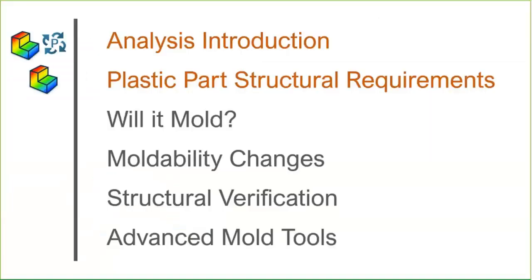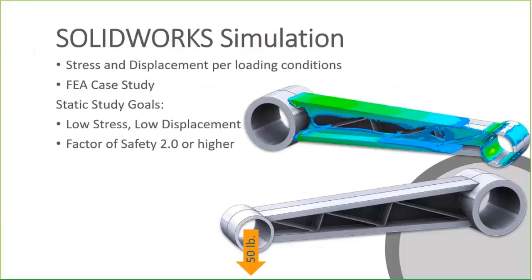Let's look at the structural requirements of our plastic part — essentially a shelf bracket. Three of these in a row will support tubing and a shelf, rated at 100 pounds total. Being conservative engineers, we're going to load one bracket with 50 pounds — half the load on just one bracket. Our goals are to keep stress as low as possible, displacement as small as possible, and achieve a minimum factor of safety of two or higher.